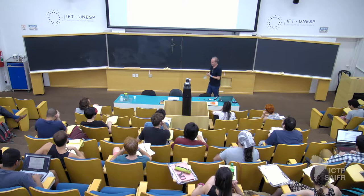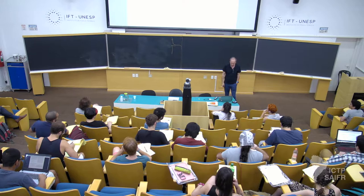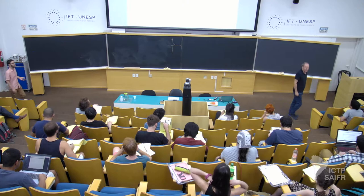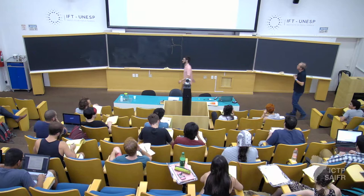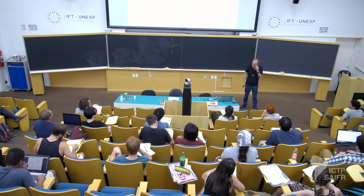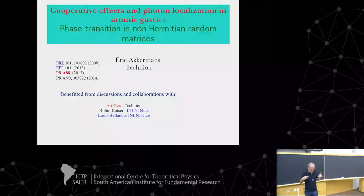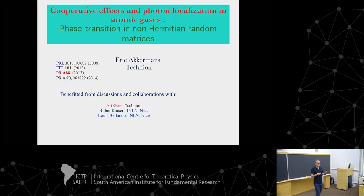So I'll capitalize on your expertise and go fast. Be prepared for it. So this is the second thing. I promise that today I will speak mostly, if not only, about photons and atomic gases, and I will keep this promise. The title is 'Cooperative Effects and Photon Localization in Atomic Gases.' The second title is 'Phase Transition in Non-Hermitian Random Matrices.' The first title is about the physics we are interested in; the second is about how to implement this physics using interesting and non-usual theoretical tools.